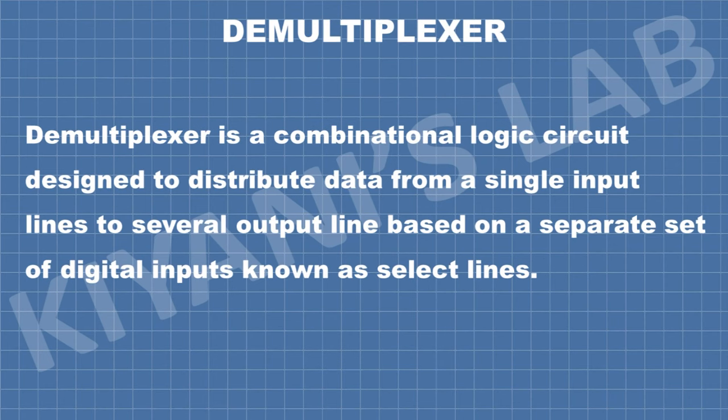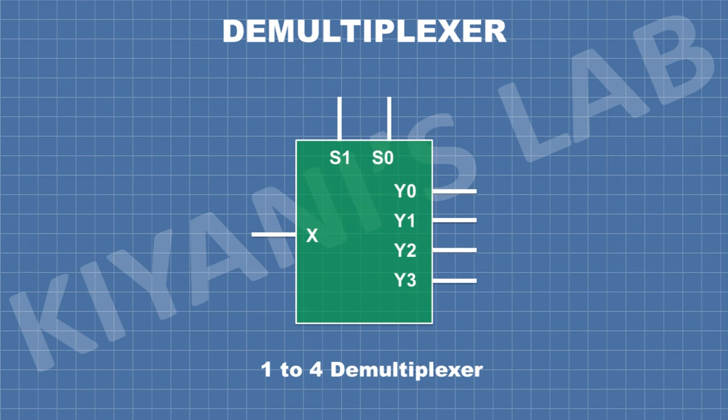Demultiplexer is a combinational logic circuit designed to distribute data from a single input line to several output lines based on a separate set of digital inputs known as select lines. This is the symbol of one to four demultiplexer. Now let's see how a one to four demultiplexer works.